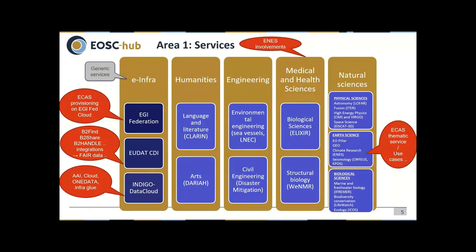Here is a short overview of where we as a community are involved in the European Open Science Cloud. You can see the vertical communities contributing to the EOSC as well as the infrastructure layer. We are on one hand part of the earth science community — this is also where our ENAS climate analytics service is part as a thematic service — but we are also engaged in the infrastructure layer, especially with respect to the FAIR data principles to support the sharing and reuse of data.